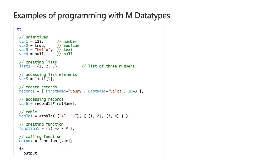Now we're going to look a lot more at tables. Here's some simple syntax to get started with a table. Note that many functions in the language start with a pound sign — you get used to that. Here's a quick example of a function: when you define a function, you define a parameter list of one or more parameters, and then you define the function body, how it evaluates.